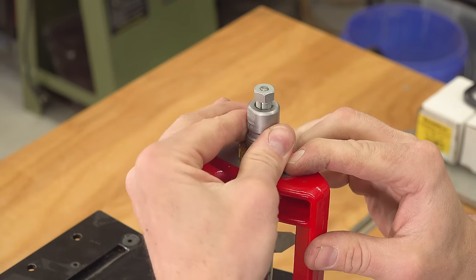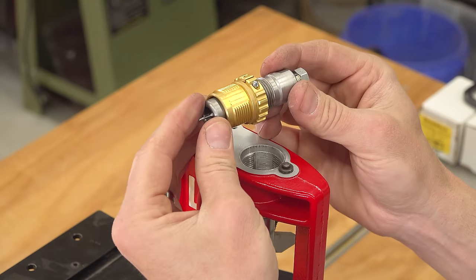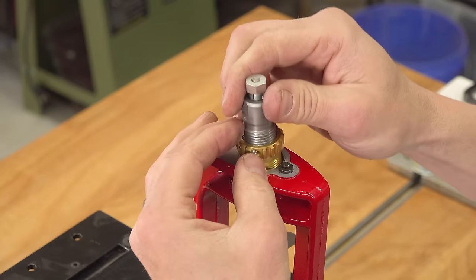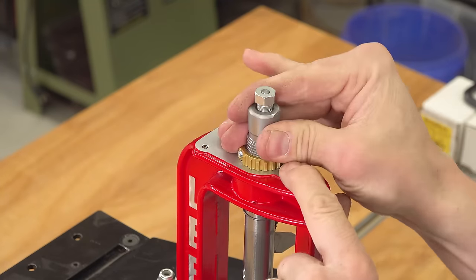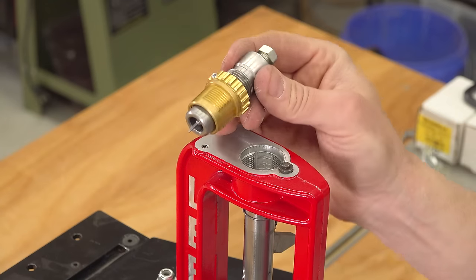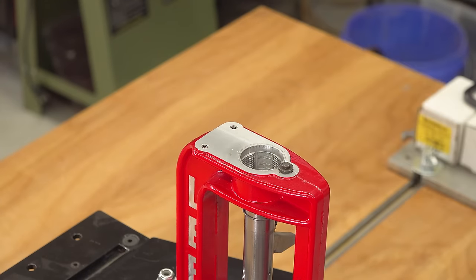I'm going to push this button each time so that it doesn't get bound up on these splines. And just that quickly we can remove the die and the lock ring eliminator from the press. It's going to go in just as quick. Very quick and convenient way to get your dies adjusted and in and out of the press.